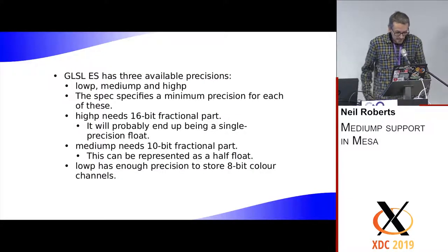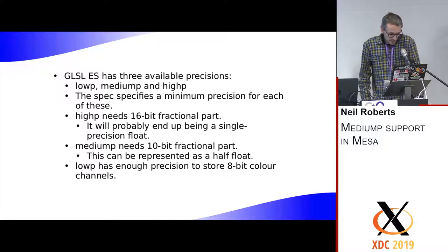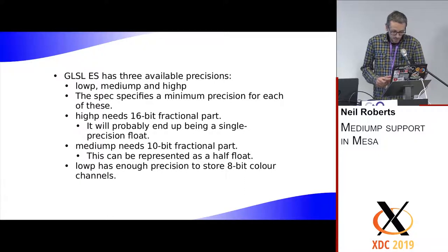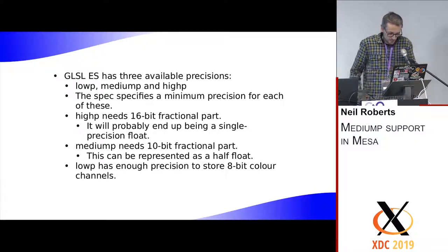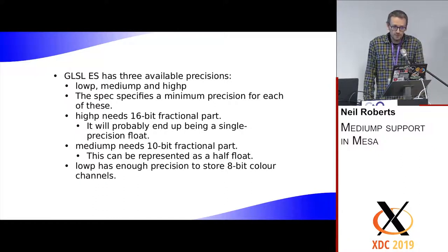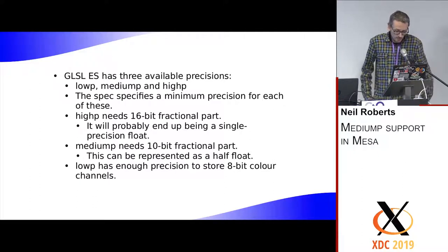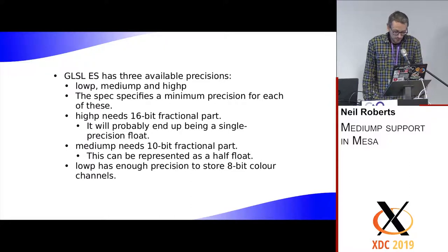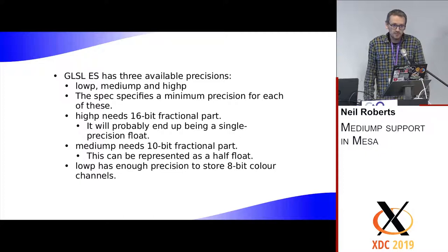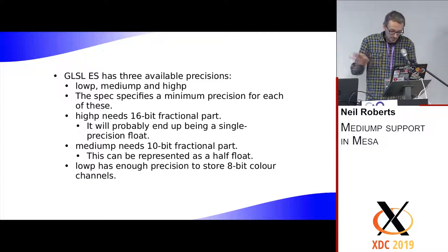In GLSL ES, there are three precisions you can use. In the spec, each precision has a specific required implementation. For highp, you need a 16-bit fractional part, which usually ends up as a normal single-precision 32-bit float. With mediump, you only need a 10-bit fractional part, enough to implement with a half-float 16-bit float. And there's also lowp, which is just about enough precision to store an 8-bit color value in the range 0 to 1.